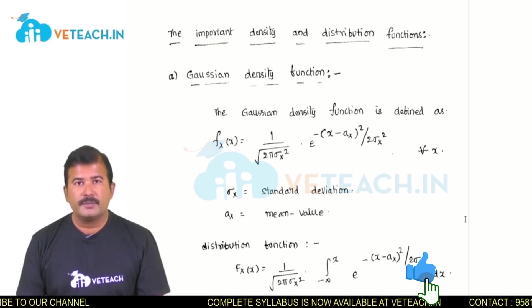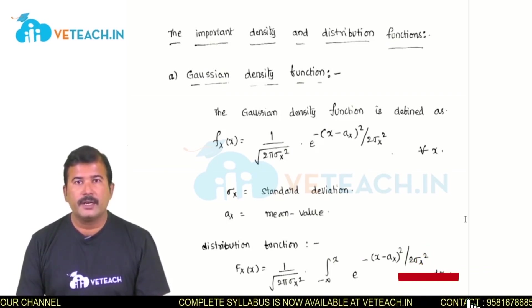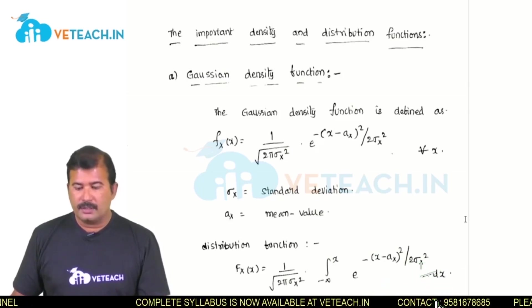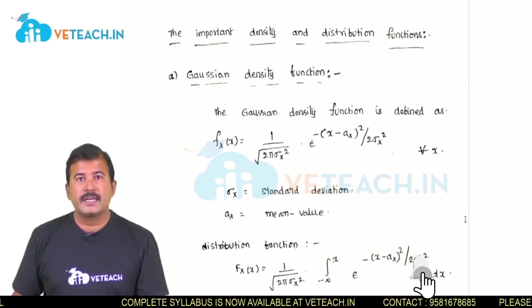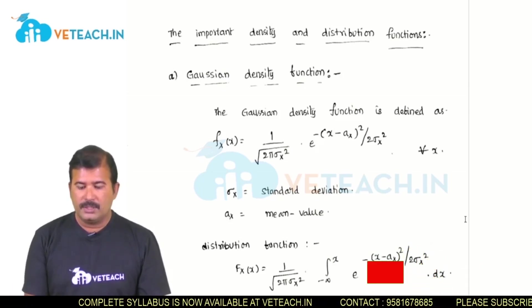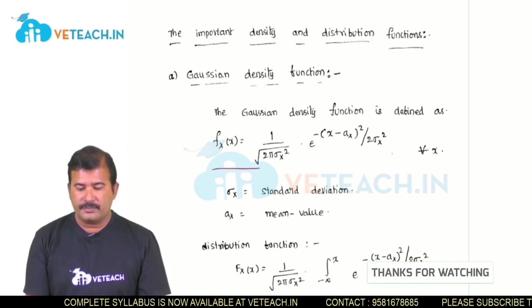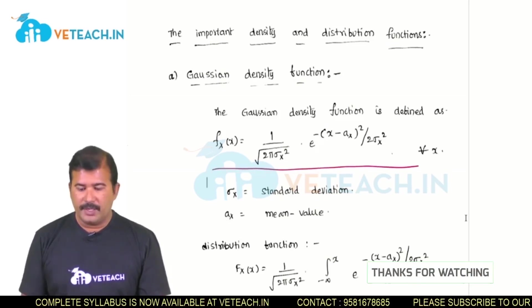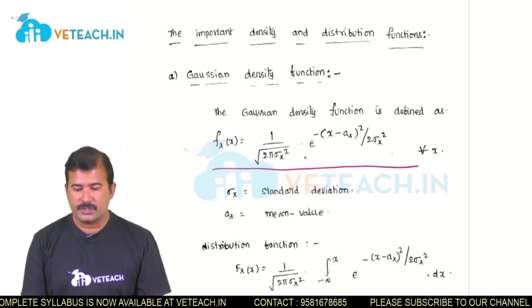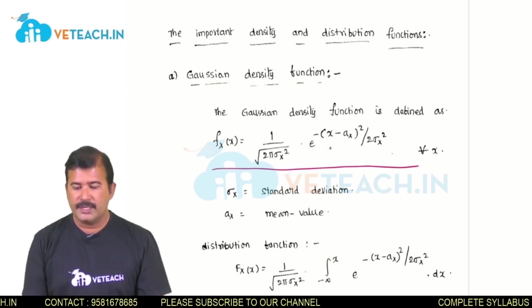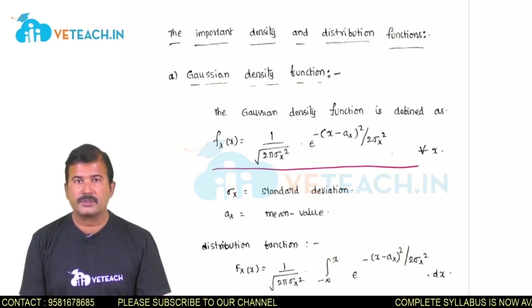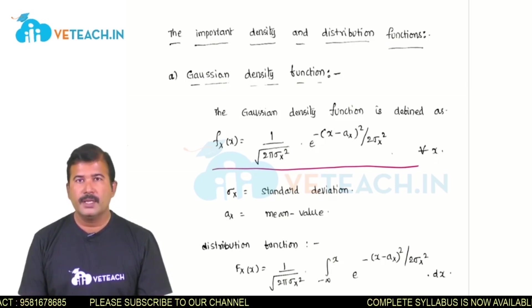Gaussian density function finds its applications particularly in noise estimation. The Gaussian density exactly matches with the noise function. The density function of the Gaussian random variable is 1 by square root of 2 pi sigma x squared, into e raised to minus of x minus Ax whole square by 2 sigma x squared, for all values of x.